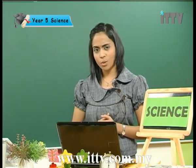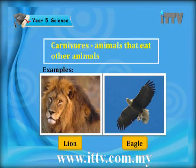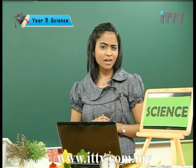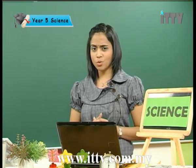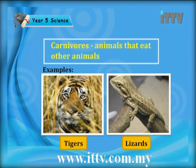So that was about herbivores. What about carnivores — what are they actually? Carnivores are animals that eat other animals. The examples of carnivores are firstly the lion and the eagle. Did you know that eagles are actually carnivores? That is because eagles usually consume rats and rabbits. Another example of carnivores are tigers and lizards as well.